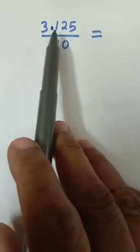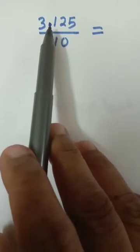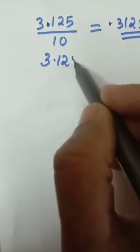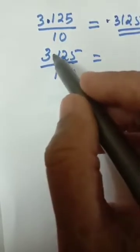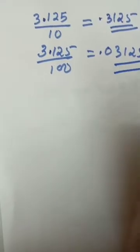I told you decimal will move back when you divide. 3.125 divided by 100: take 2 digits before the decimal. Here there is 1 digit only, so you take 1 and add a 0. Before that you put a point: 0.03125. When you divide by 10, 100, 1000, the decimal moves backward. When you multiply by 10, 100, 1000, the decimal will move forward.